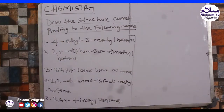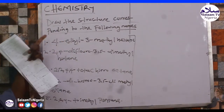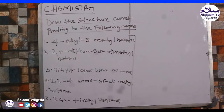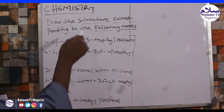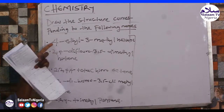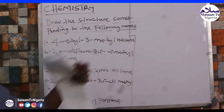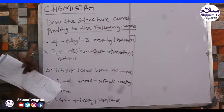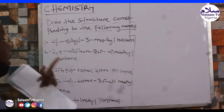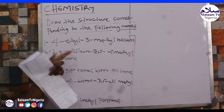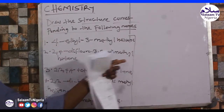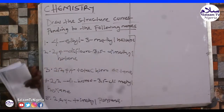So, we need to draw the structure corresponding to the following names. Number 1: 4-ethyl-3-methylhexane. Number 2: 2,4-difluoro-3,5-dimethylhexane.